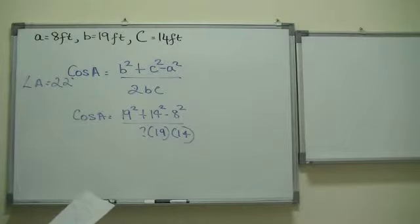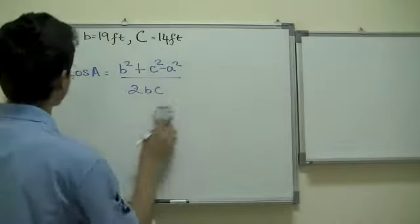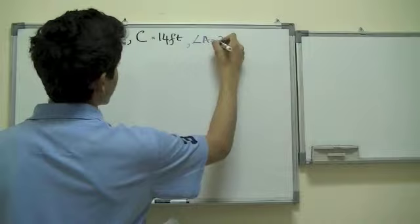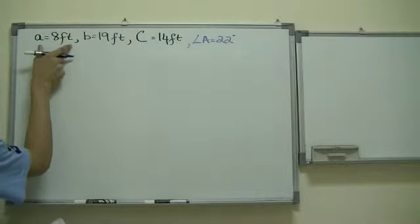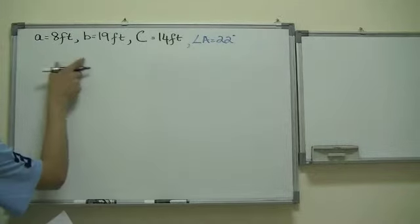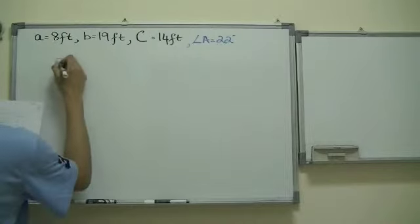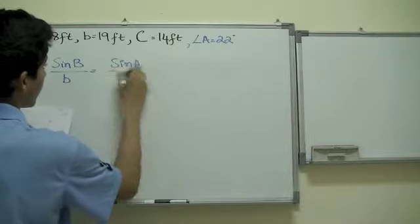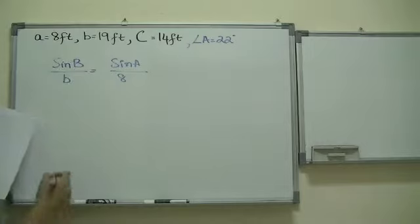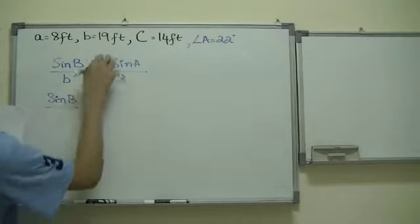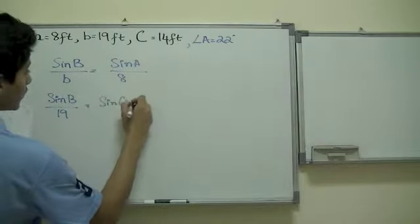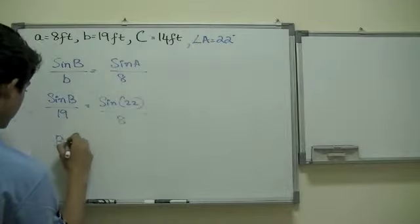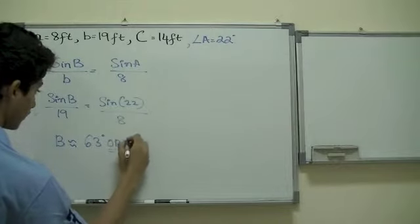Now you can also find the angle B by using law of sines. Now what we have is we have angle A which we found out to be 22 degrees. Now if you look, we have side A and angle A. So we can of course use law of sines because all we need is the angle B. So we can say that sine B, which we don't know, over B is equal to sine A which we know over 8 because the length is 8. Cross multiply and find the answer.